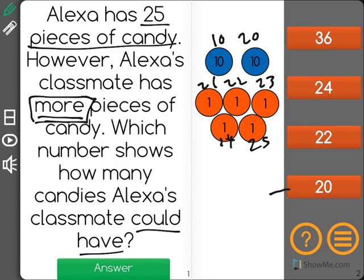If Alexa's classmate had 20, that would just be these first two 10s up here. If she had 22, it would stop right here. And 24 still wouldn't be as much as Alexa's 25.